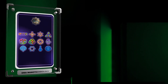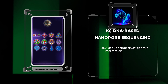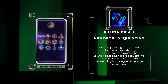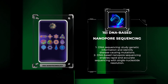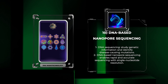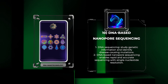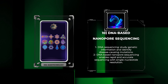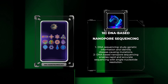DNA sequencing is a vital technique for studying genetic information and identifying disease-causing mutations. DNA-based nanopore sequencing is a revolutionary approach that involves passing a DNA molecule through a nanopore and measuring the changes in electrical current as individual nucleotides pass through the pore.